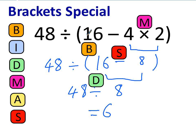So just to recap: inside a pair of brackets, if there's more than one operation going on, you go in the order of BIDMAS. In this case we had multiplication and subtraction. We did the multiplication first because, according to the order of BIDMAS, it is more important — it comes before subtraction.